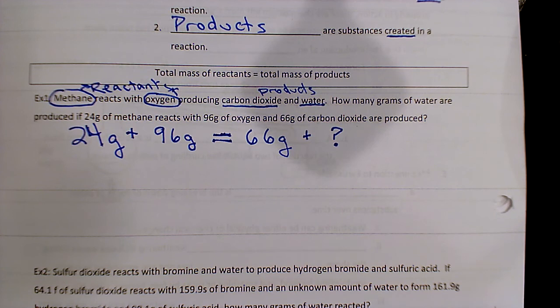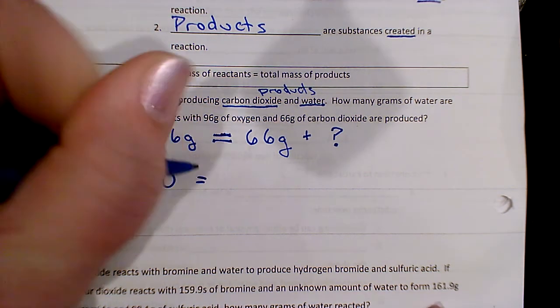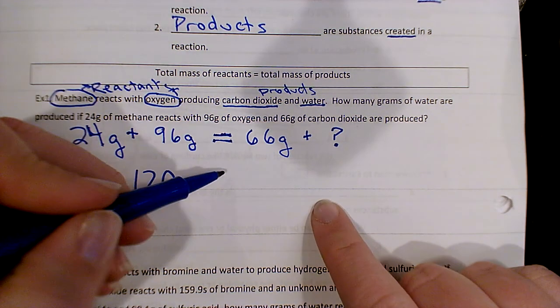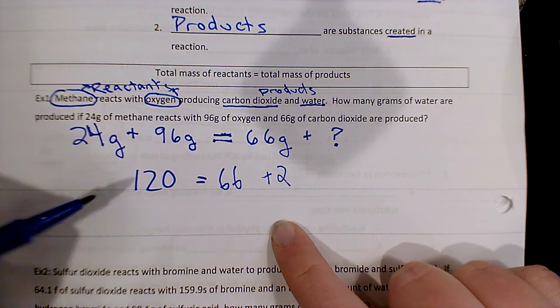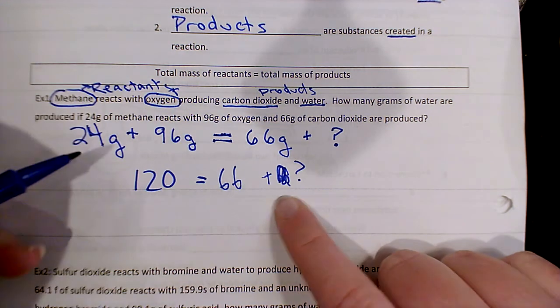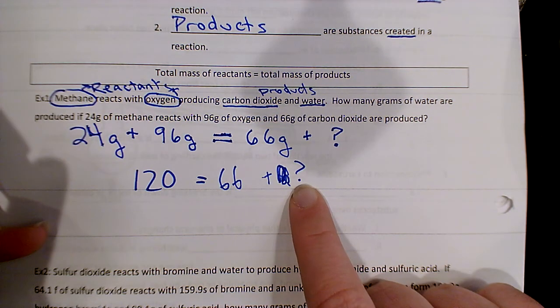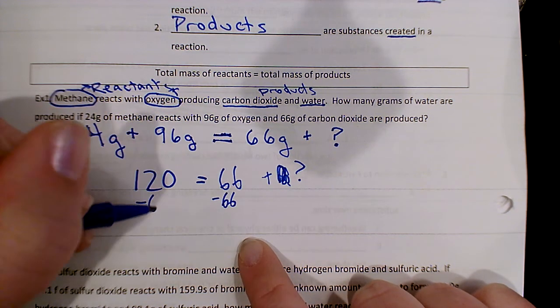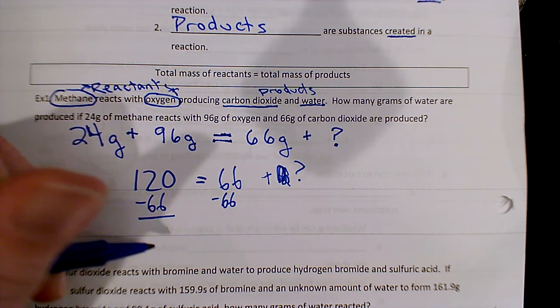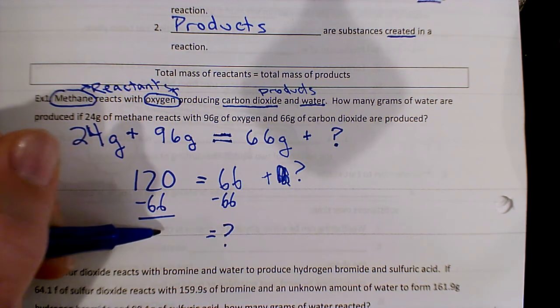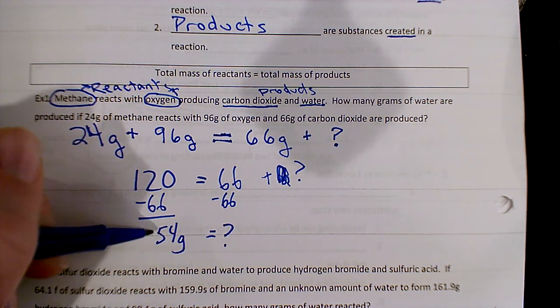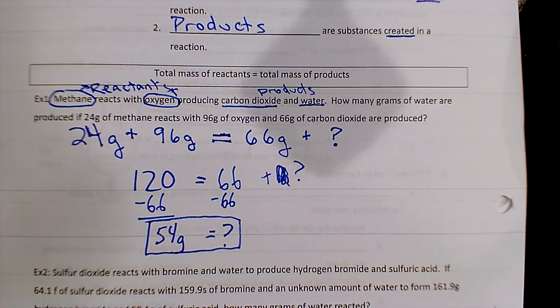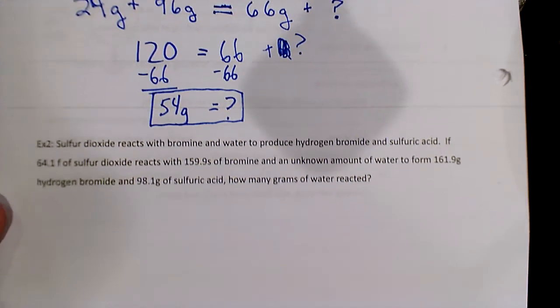So then we just have a really simple math equation. I have 24 plus 96 is 120, and then that's still 66 plus I don't know. So what I don't know is plus 66, so I'm going to subtract 66, and we end up with my question mark is 54 grams. So my answer would be 54 grams of water.